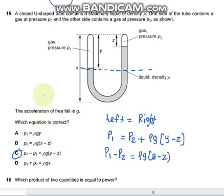Question 15 says that a closed tube is shown. It is not exposed to atmospheric pressure. Which equation is correct? Applying the barometer equation, left equals right. On the left we have pressure P1, on the right we have pressure P2 and the pressure because of the liquid, which is rho g times y minus x, which is this height. Rearranging this, C is the proper answer.